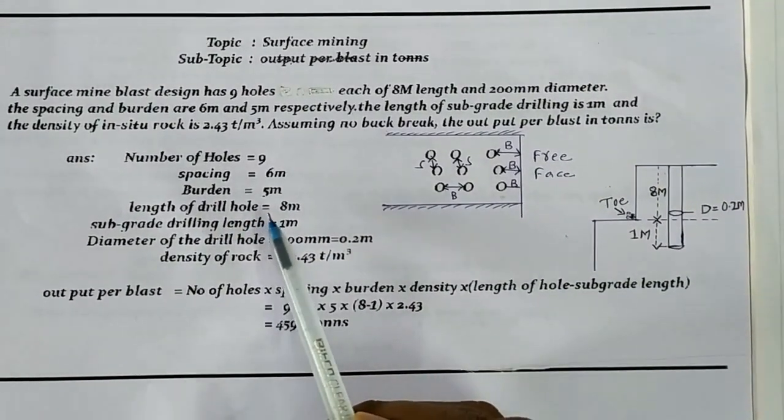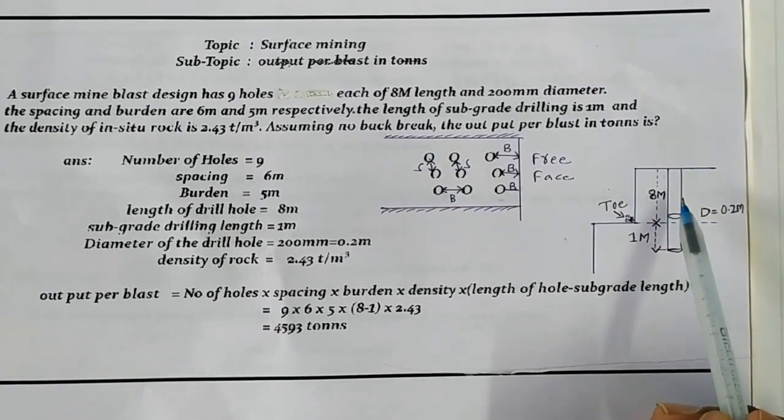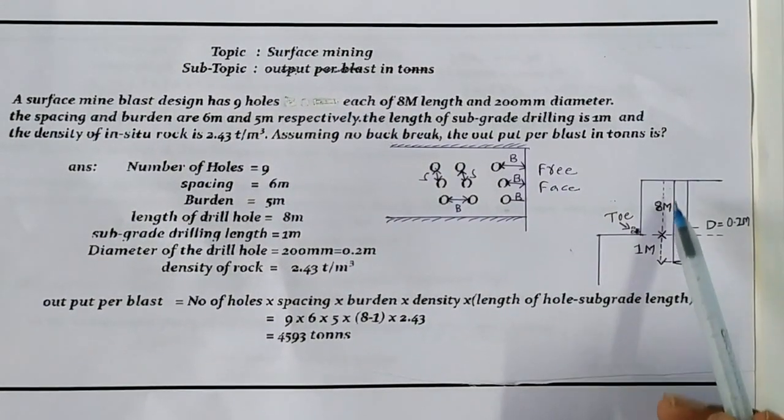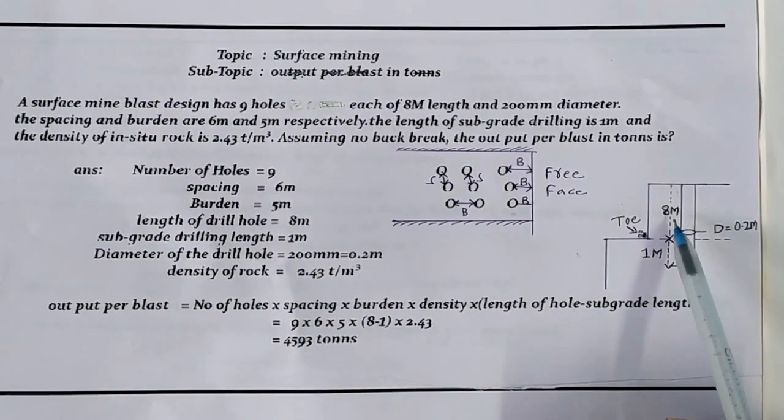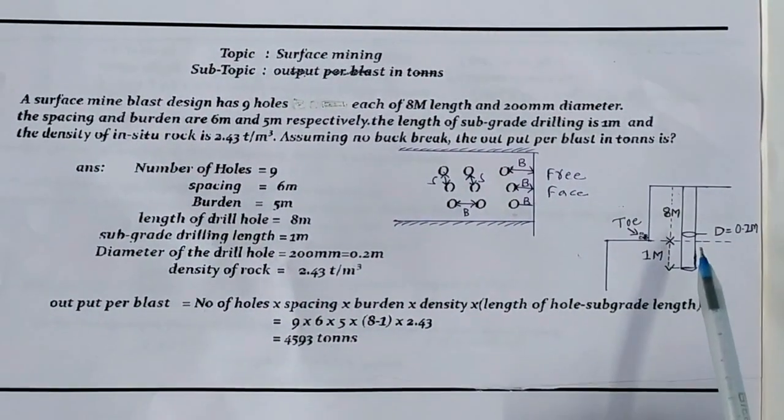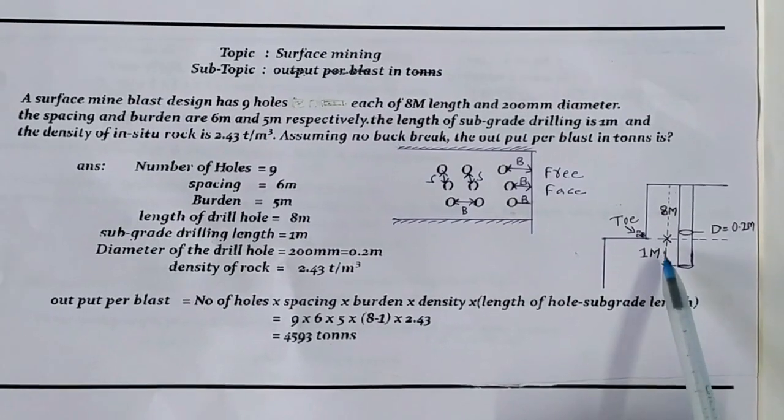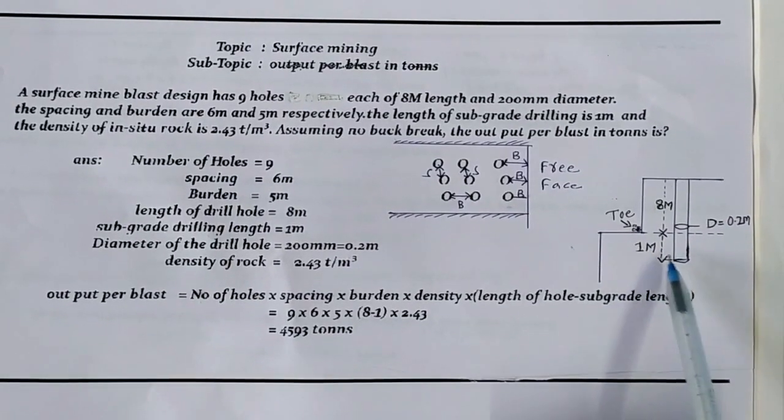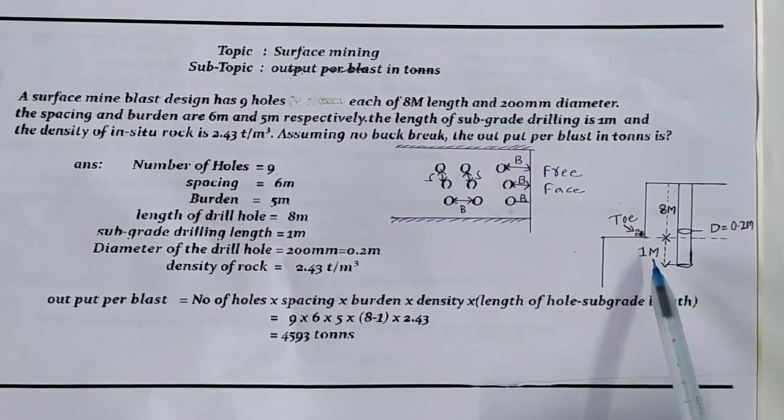Length of drill hole is 8 meters. In the figure, this is the drill hole with length of 8 meters. Subgrade drilling length is 1 meter. Below this length is called the subgrade length, which is 1 meter.